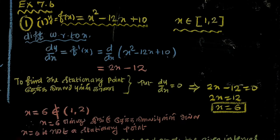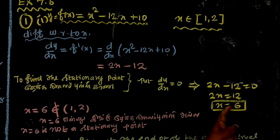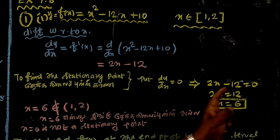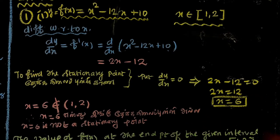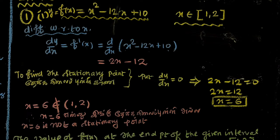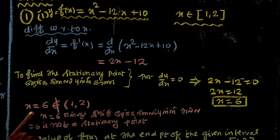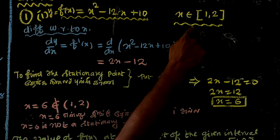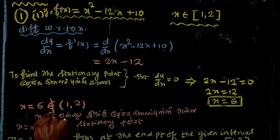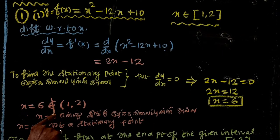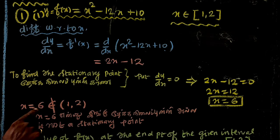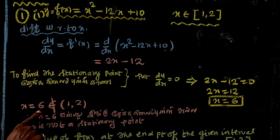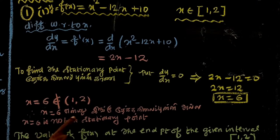Now looking at the maximum and minimum values, the value at the critical point and the value at the endpoints of the interval must be considered. The closed interval is [1, 2], and x equals 6 is not in [1, 2], so x equals 6 is not a valid critical point in this interval.